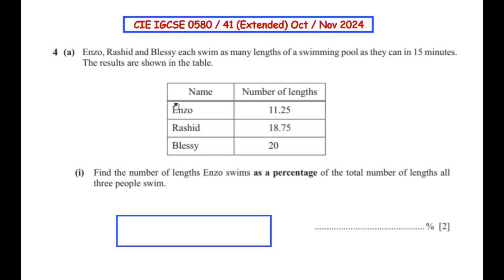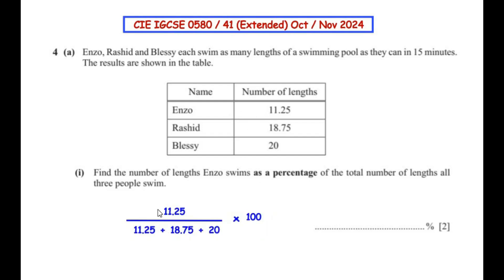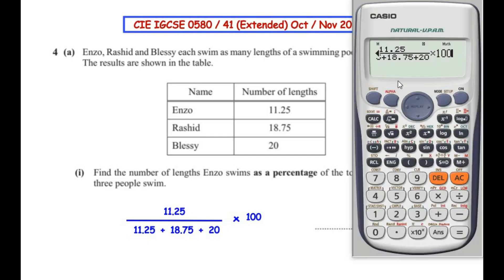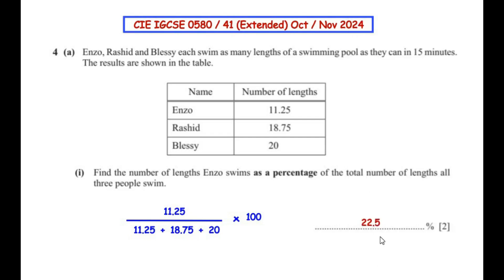We need the number of lengths Enzo swims as a percentage of the total lengths all three people swim. The percentage is 11.25 divided by the sum of all lengths, multiplied by 100. This gives us 45 over 2, or as a decimal 22.5. So the answer is 22.5 percent.